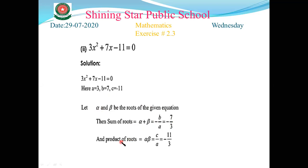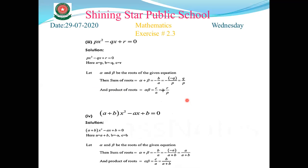For the product of roots, alpha times beta = c/a. Here c is -11 and a is 3, so the product of roots is -11/3. That is the required answer for part number two.